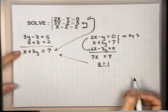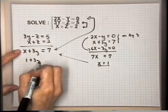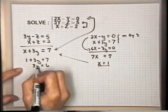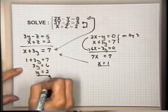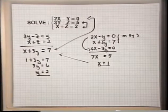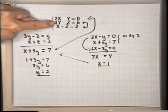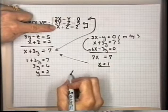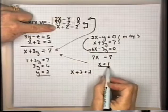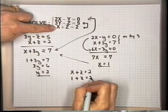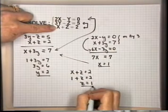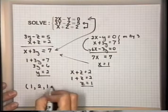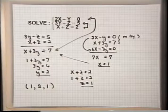Substituting x equals 1 back into x plus 3y equals 7: 1 plus 3y equals 7; subtracting 1 gives 3y equals 6; dividing by 3 gives y equals 2. Now to find z, I'll use the third original equation x plus z equals 2. Since x is 1: 1 plus z equals 2; subtracting 1 gives z equals 1. Putting these in order: x is 1, y is 2, z is 1. The ordered triple is (1, 2, 1). You can quickly check that this is indeed a solution for this system.